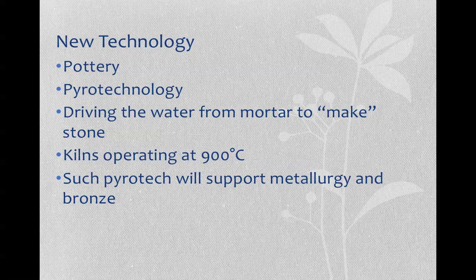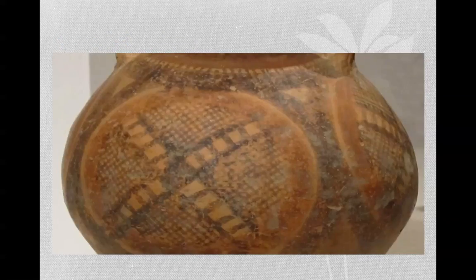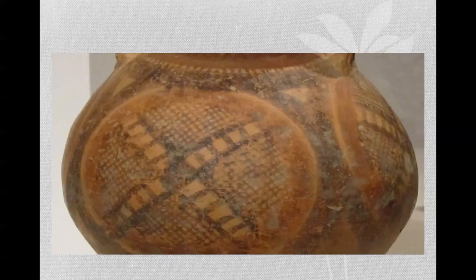The same kind of use and control of heat will support metallurgy and bronze working, so the Neolithic era is often called the Bronze Age as well. This is just one example of a Neolithic pot. Not only do you get a shape that is utilitarian and functional, but you also get this nice little design here that someone took the time to develop — an aesthetic association with this pot.